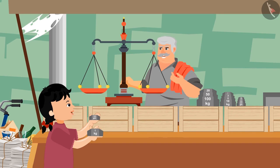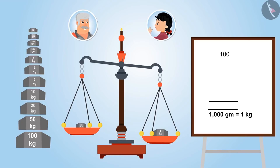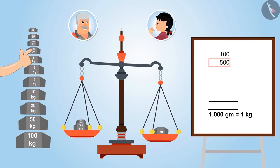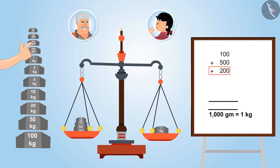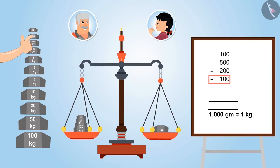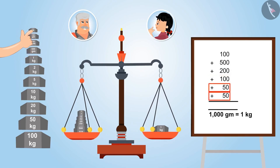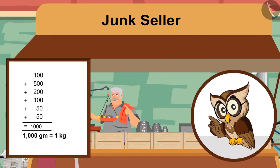Okay, Uncle. To this 100 grams, I am adding 500 grams, then 200 grams, then 100 grams and the last two stones of 50 grams each. Yes, now the total is 1000 grams. Look, Uncle, the scale is now balanced. Very good. So, kids, now you understood. 1 kg is not equal to 100 grams. Instead, it is equal to 1000 grams.